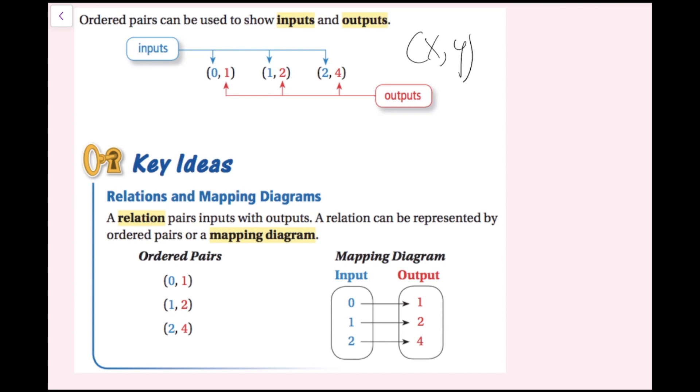Now we're going to talk about relations and mapping diagrams. A relation pairs inputs with outputs. A relation can be represented by ordered pairs or a mapping diagram. So here's a relation written as ordered pairs: 0 comma 1, 1 comma 2, and 2 comma 4. The blue ones are the inputs, the red ones are the outputs. And then here's the exact same relation as a mapping diagram. We have our input column, we have our output column, and then our inputs are being mapped with these arrows towards the corresponding output. So 0 goes with 1, 1 goes with 2, and 2 goes with 4.